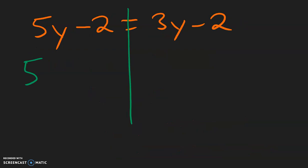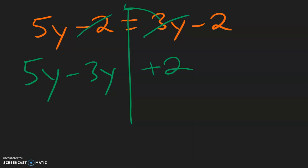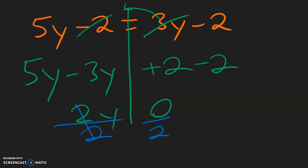For this example, let's get all the y's on the left side, so this 5y can stay. This 3y, because it's positive and moves over, becomes negative 3y. And for the constants, this negative 2 needs to move over, becomes positive 2. Copy down this minus 2. So we have all the y's on the left side and all the regular numbers on the right side. 5 minus 3 is 2y. 2 minus 2 is 0. We do have a number to divide, so divide by 2, and we get y equals 0. Be careful — the answer is y equals 0. Think back to the first example: we did not even have an answer, so that's no solution, because that time we had two numbers that were not equal. So 0 is an answer — 0 is not no solution.